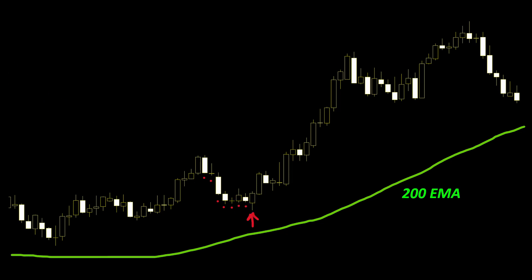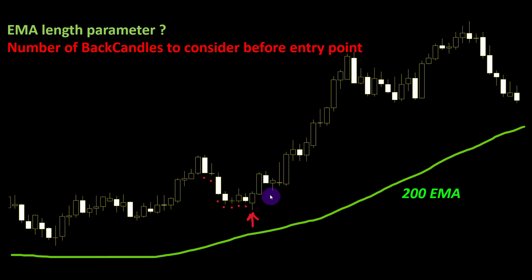Just like any other strategy, this simple approach has its own challenges. The first parameter is which length to use for the moving average — is it 200, 100, or something different? We can fine-tune this by backtesting on a particular currency and looking for maximum returns. Then we have the number of back candles to consider before the current candle — shall we take 7, 8, 10 or 20? I left it as a variable in our code so we can experiment and check the effect on returns.